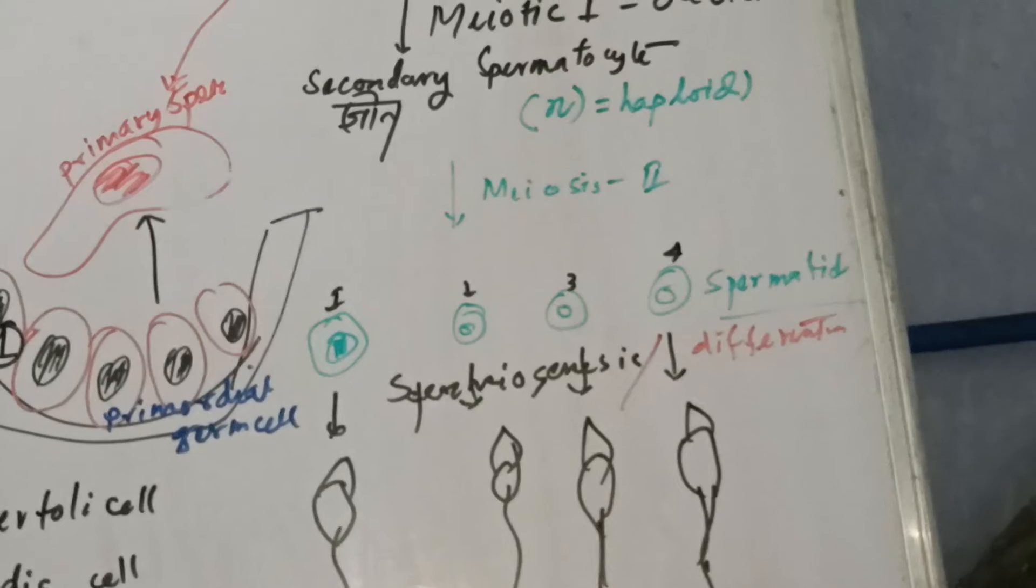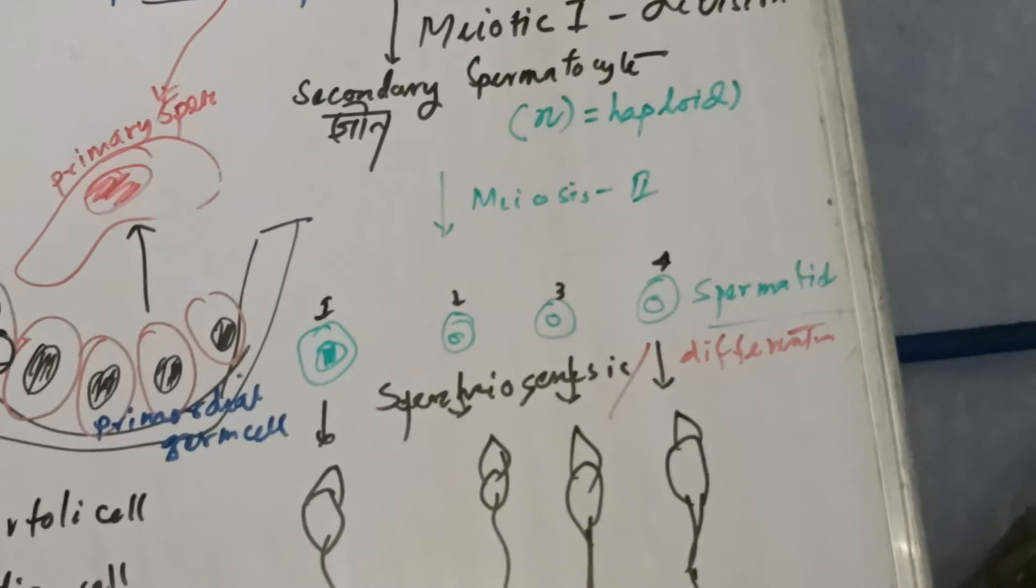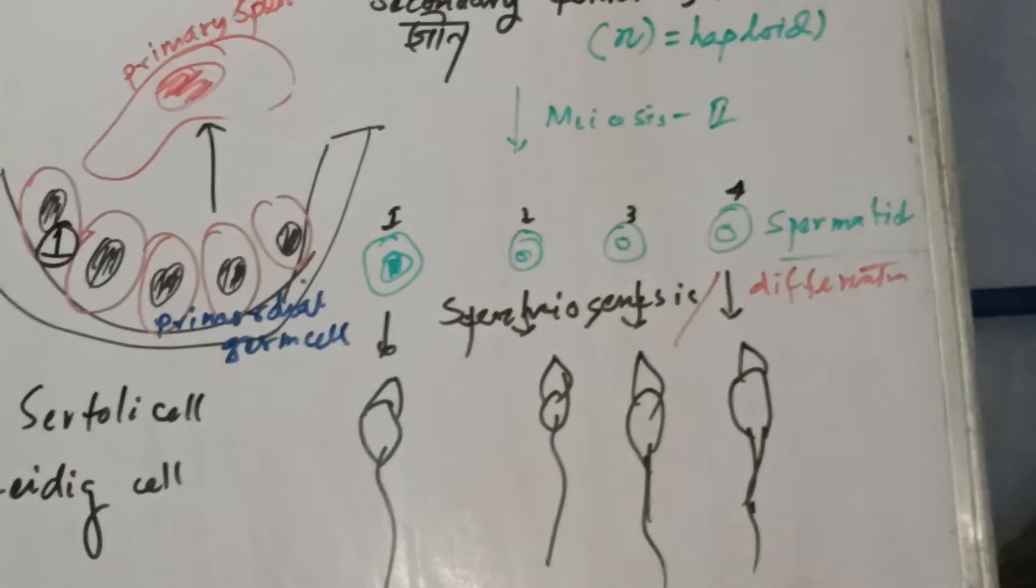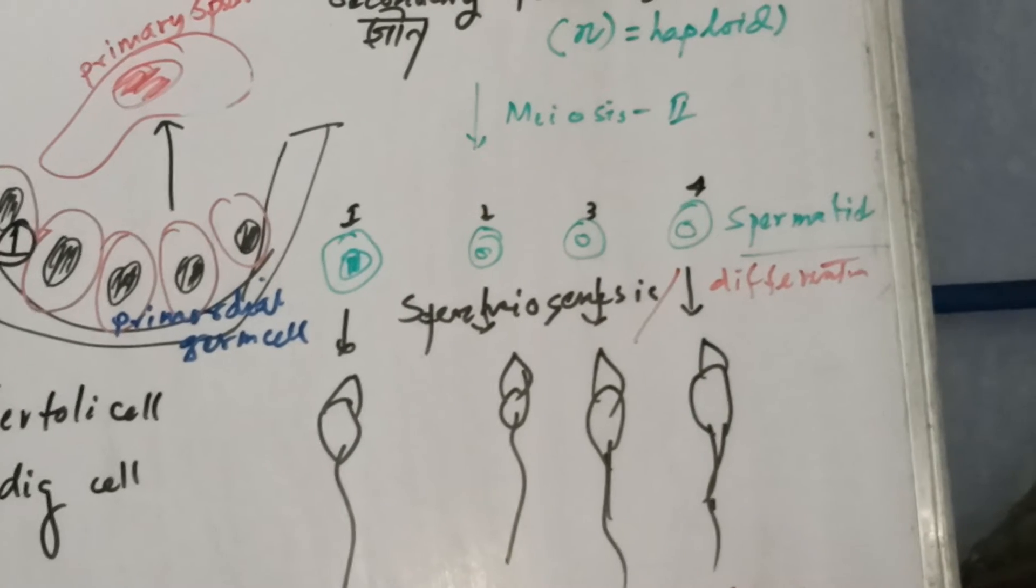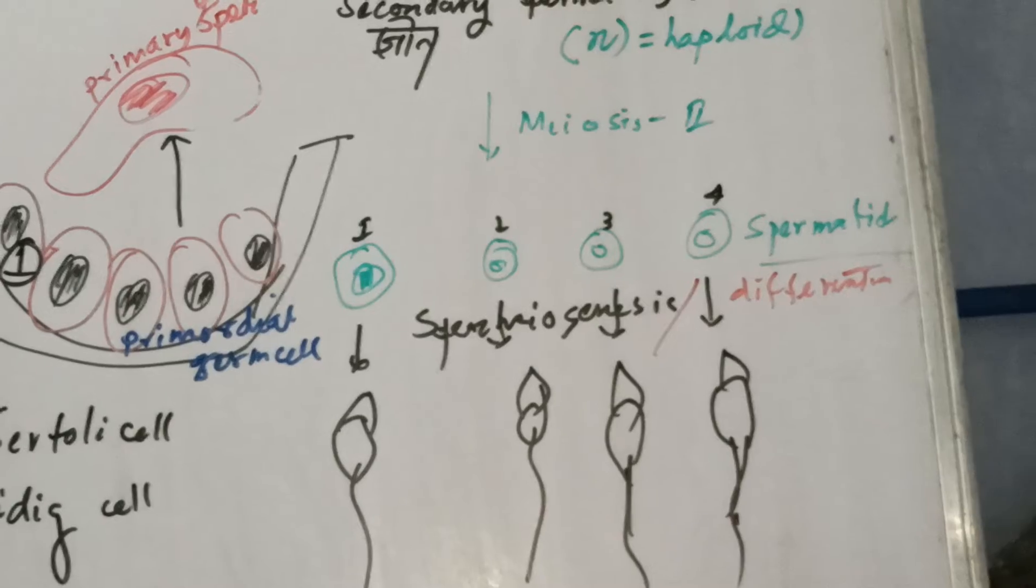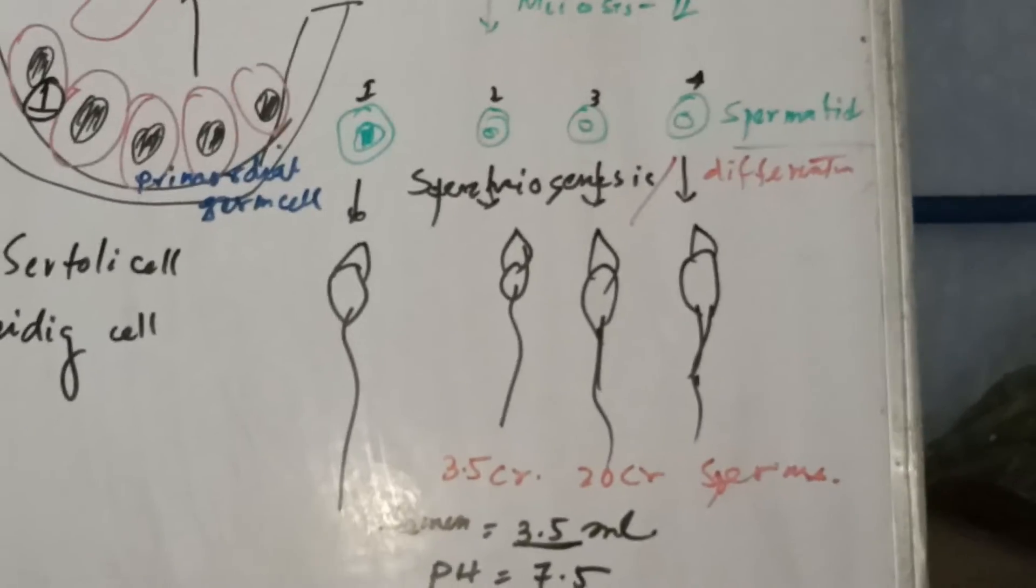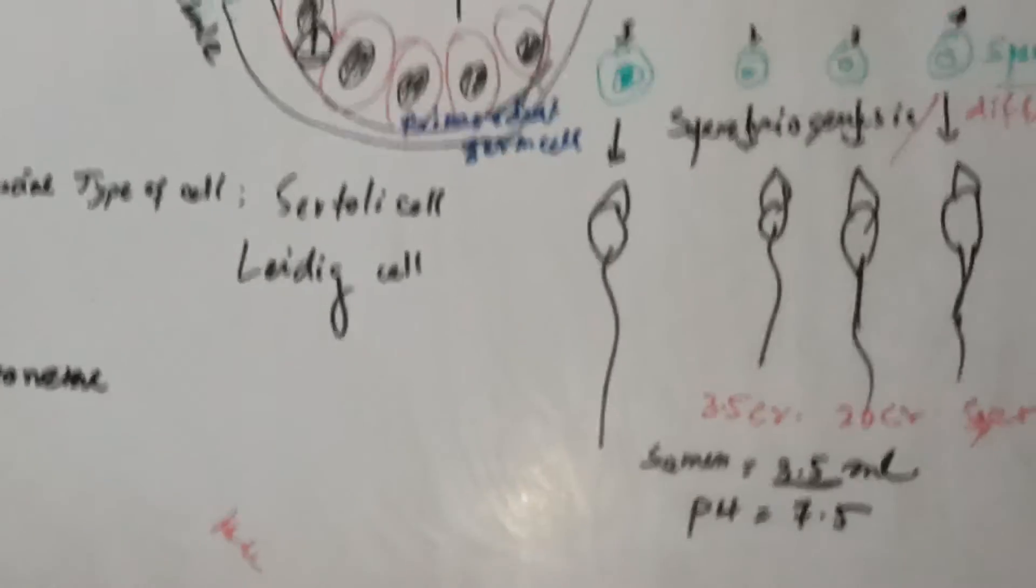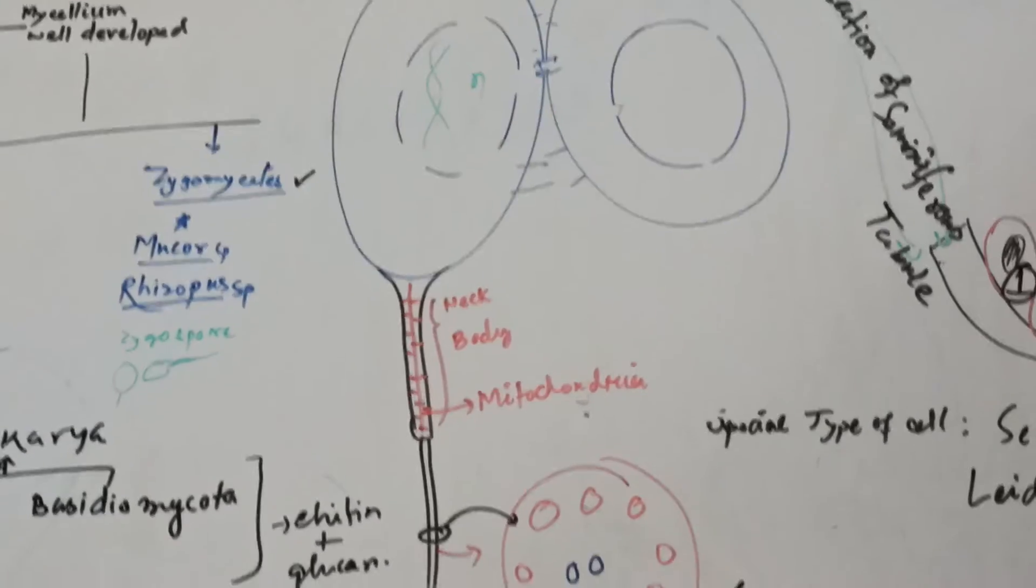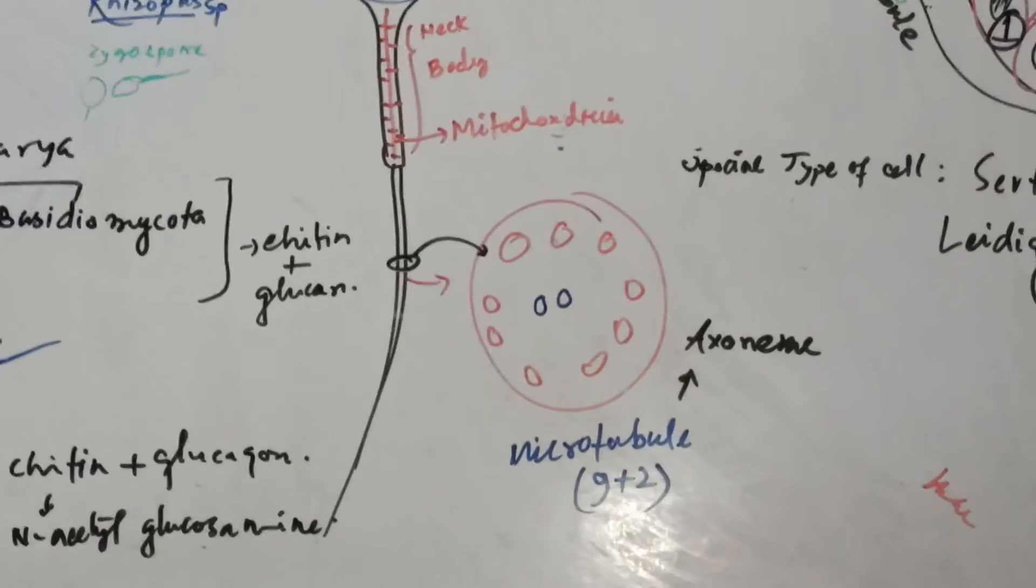This makes four spermatids. These are not sperm until they undergo differentiation. Differentiation means some modifications within the spermatid: the flagella comes out and the mature sperm grows. This mature sperm has a flagella with a neck portion and then the flagella.